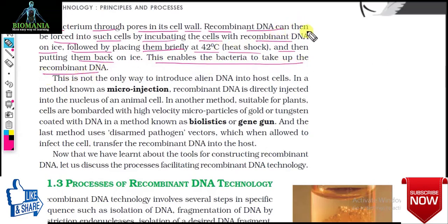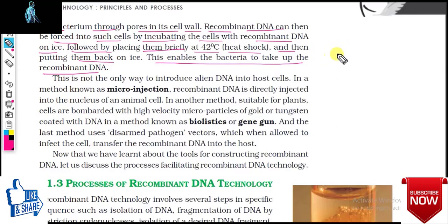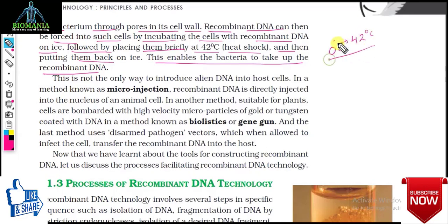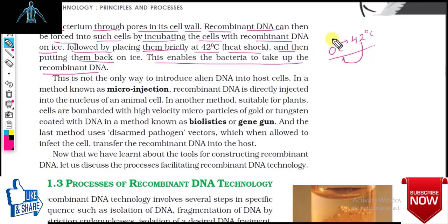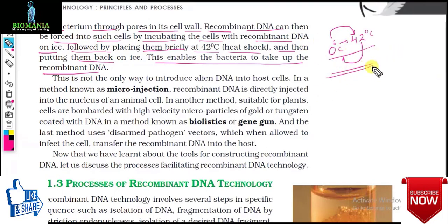Competent host for transformation with recombinant DNA: since DNA is a hydrophilic molecule, it cannot pass through the cell membranes. In order to force bacteria to take up the plasmid, the bacterial cell must first be made competent to take up DNA. This is done by treating them with a specific concentration of divalent cations such as calcium (Ca²⁺), which increases their efficiency of uptake.